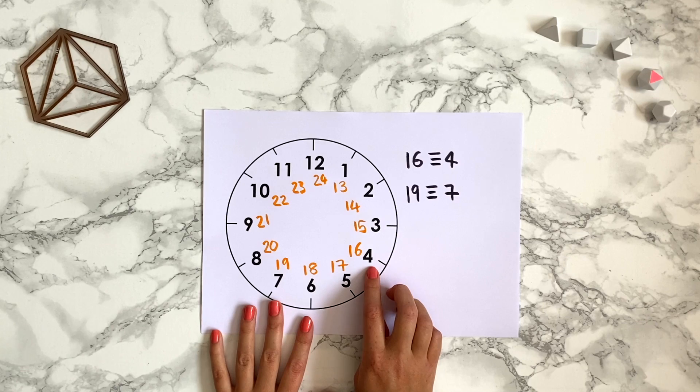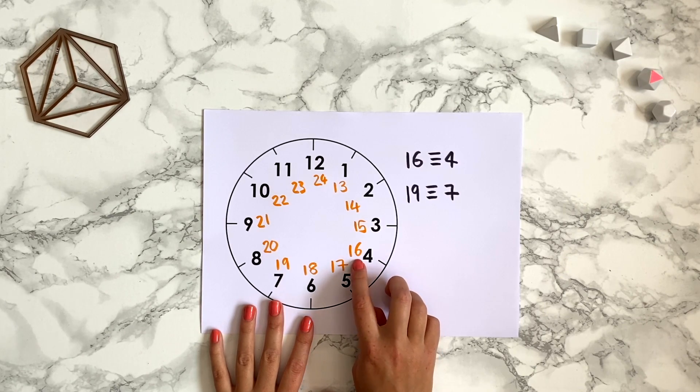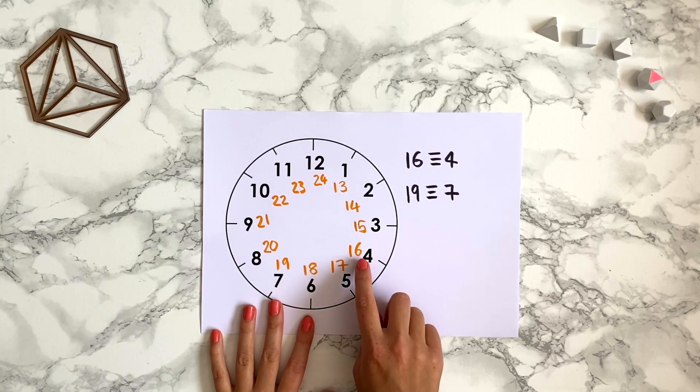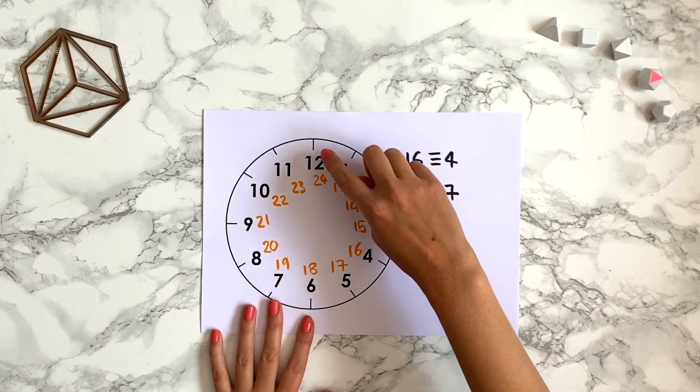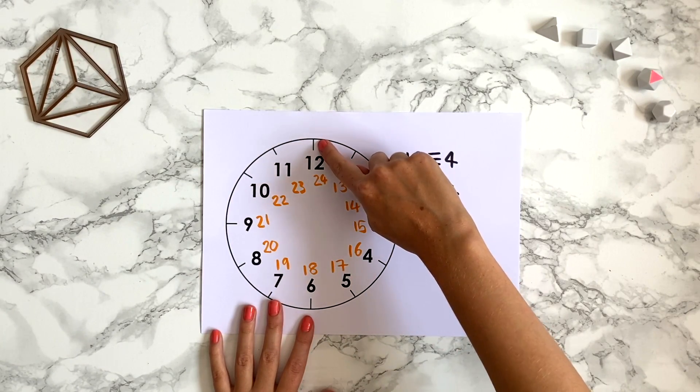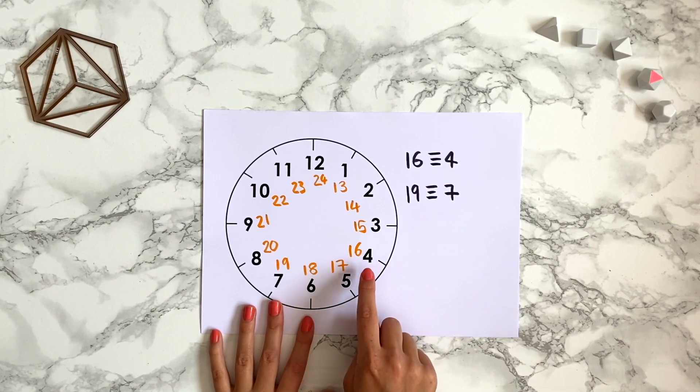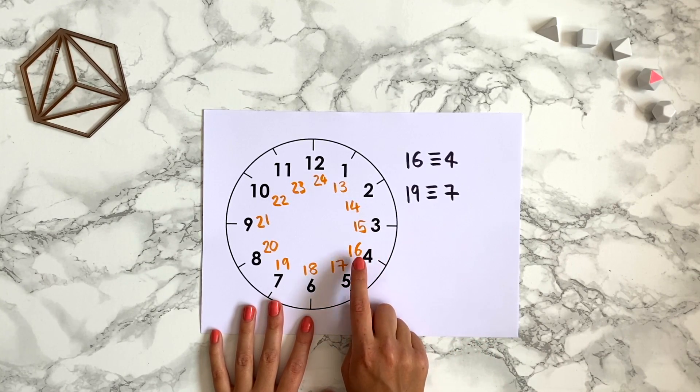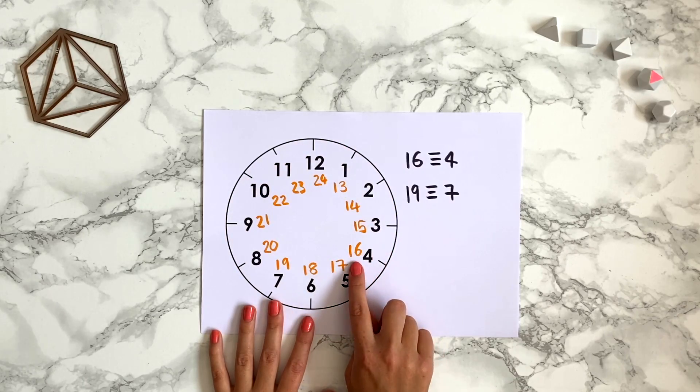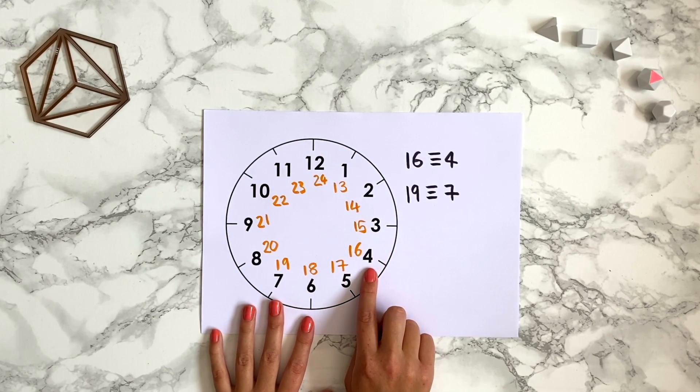Or maybe you think about the remainder when 16 is divided by 12. To get to 16 o'clock you have to go around the clock once to reach 12 o'clock, and then you have to add on an extra 4 hours to reach 16. This is the same as saying that the remainder when you divide 16 by 12 is 4. So 16 is congruent to 4.